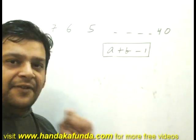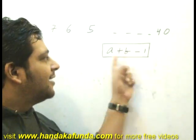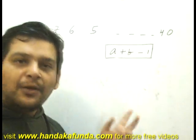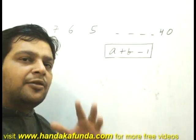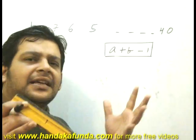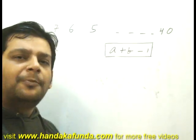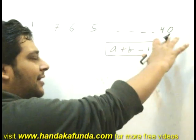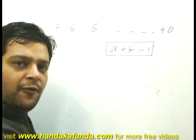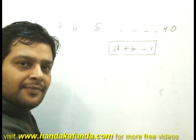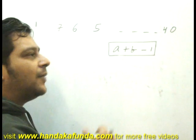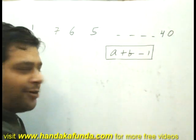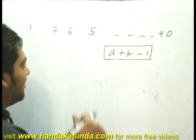In every operation, what am I doing? I am just adding the numbers and removing 1. So effectively, if I think of the whole process, it is the same as adding all the numbers from 1 to 40 and removing 39 from it. Why? Because 39 operations are there.